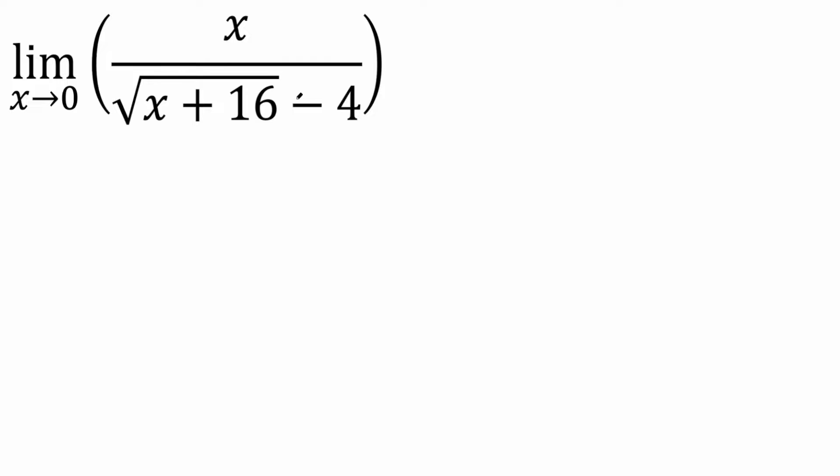What we're going to do is multiply by the conjugate. Let me show you. I'm going to multiply by the square root of x plus 16. Instead of minus 4, I'm going to put plus 4.